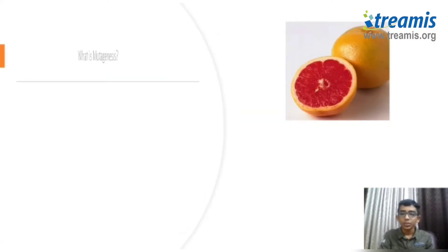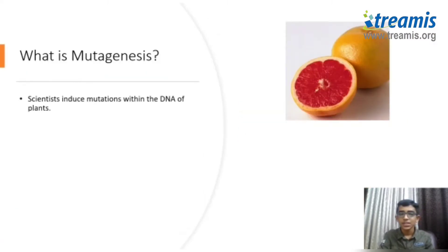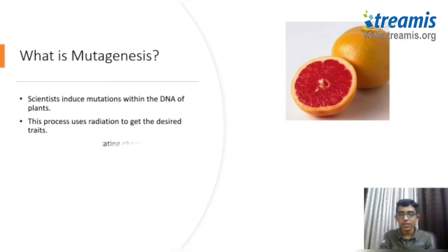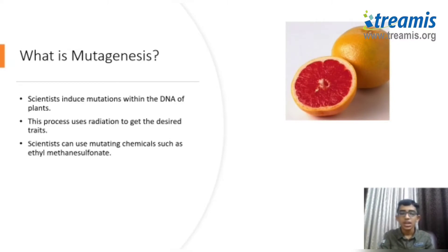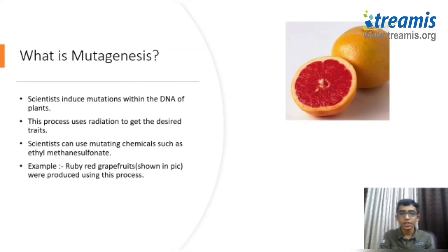What is mutagenesis? Scientists induce mutations within the DNA of plants. This process uses radiation to detect the desired characteristics. Mutating chemicals include ethyl methanesulfonate. Ruby red grapefruits, as shown in the picture, are produced using mutagenesis.